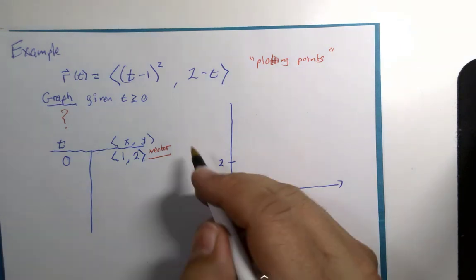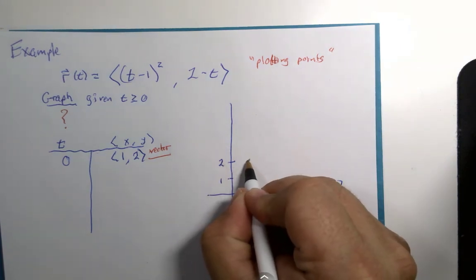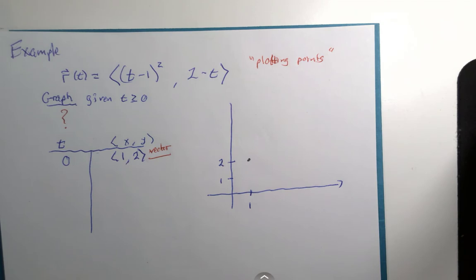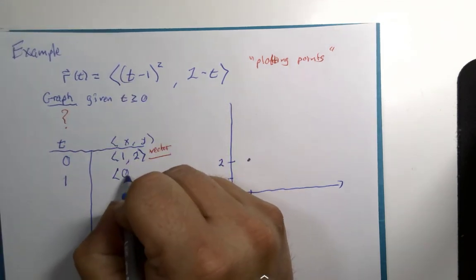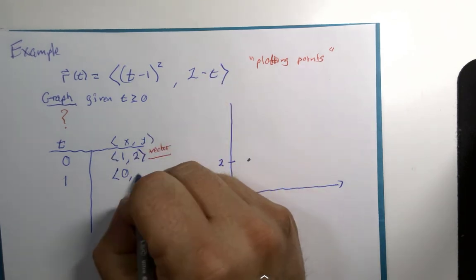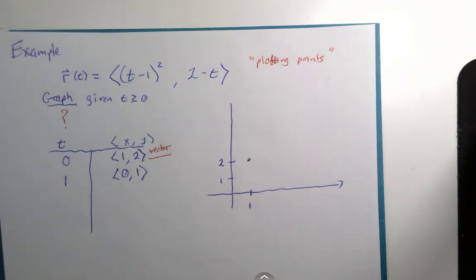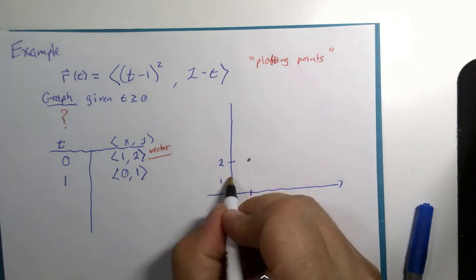So I'm going to put a point at (1, 2). If t is one, this is going to become zero. Two minus one is one. I will plot a point at (0, 1).